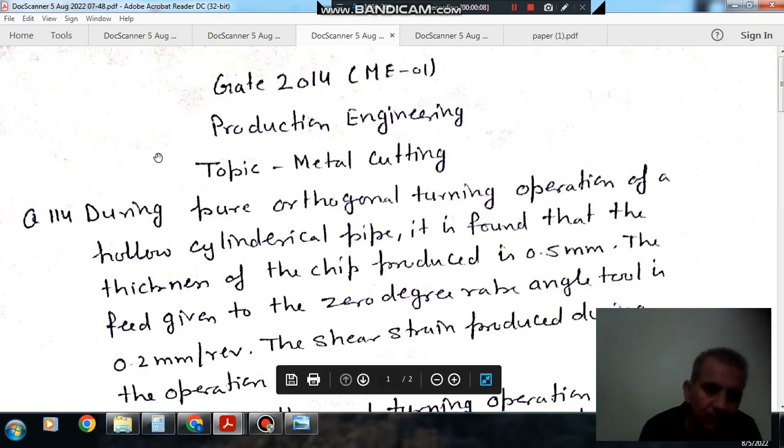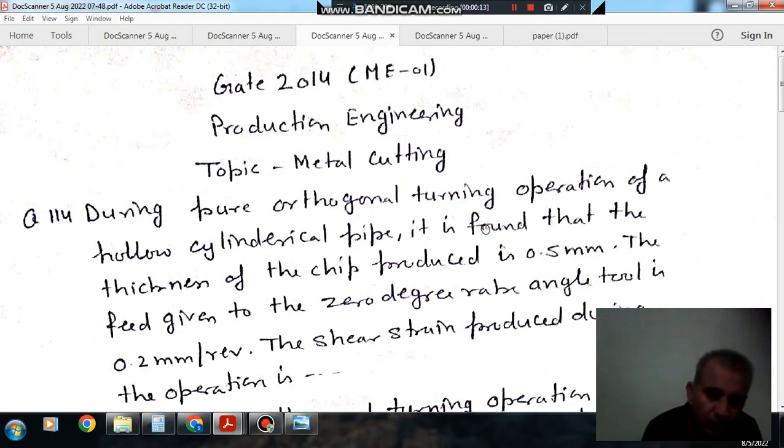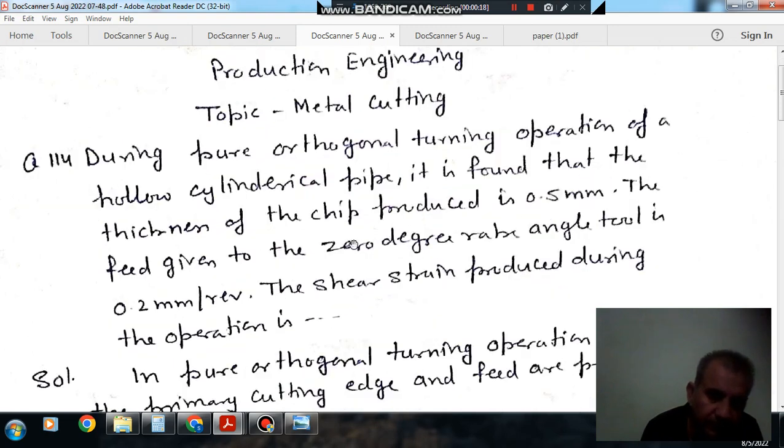Question number 114 from Gate 2014 ME01. During pure orthogonal turning operation of a hollow cylindrical pipe, it is found that the thickness of chip produced is 0.5 mm.